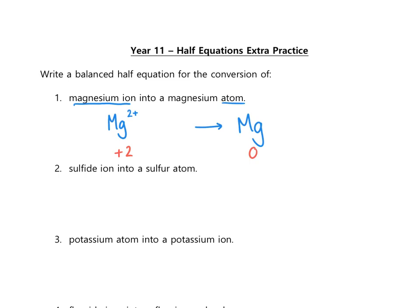Now we balance the charge by adding electrons, which have the symbol e⁻ and a charge of minus 1. Adding electrons to one side brings that side's charge down by 1 each. Ask yourself: which side needs to come down in charge to match the other? Adding electrons to the right hand side would bring it down to minus 2, which moves it further away from the left. So go back to that question: which side needs to come down to meet the other?